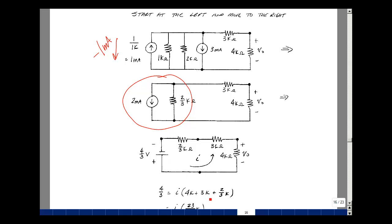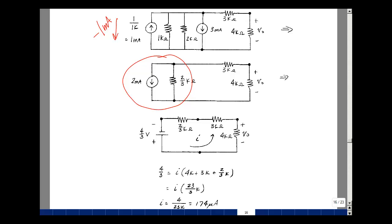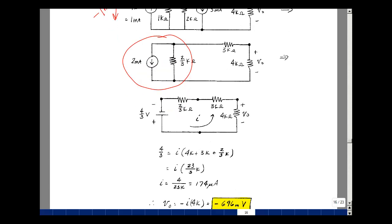So 4k plus 3k plus two-thirds k times I would be equal to four-thirds volts. I'll assign a common denominator here, say it's three, this would be 12 plus 9 plus 2, and it's 23. The threes cancel, and the current then would be 4 divided by 23k, and you see my calculator found that was 174 microamps.